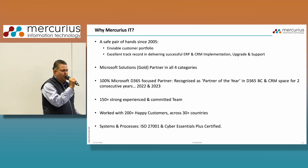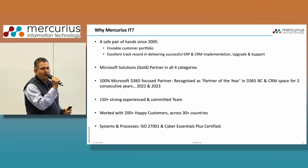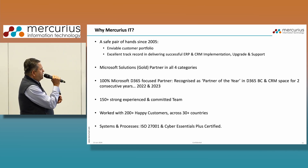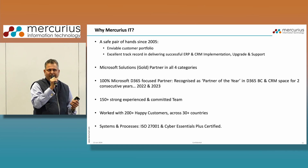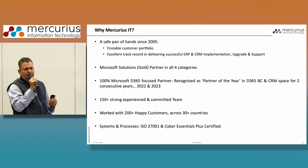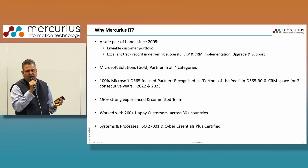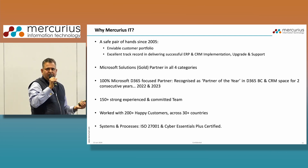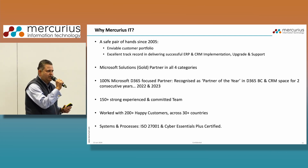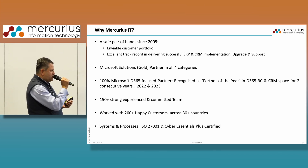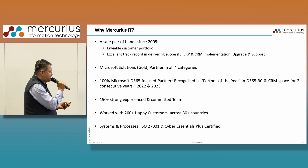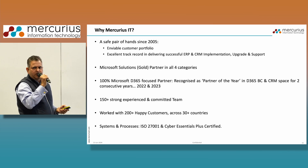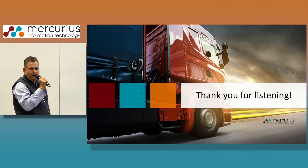About Mercurius: we have been around since 2005, set up in Milton Keynes, UK. We are Microsoft Gold Partners in all four major categories — business applications, apps, Azure, and AI and data. We were Microsoft Partner of the Year in this space two years running, 2022 and 2023. We have 150-plus staff, 200-plus happy customers, and we are ISO 27001 and Cyber Essentials Plus certified. Thank you for listening.